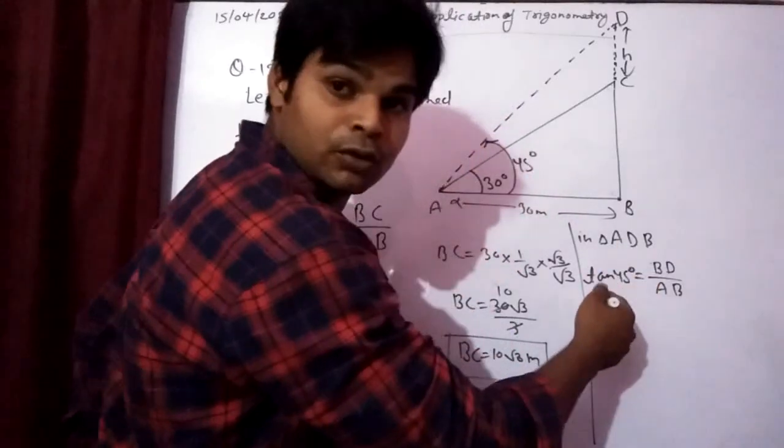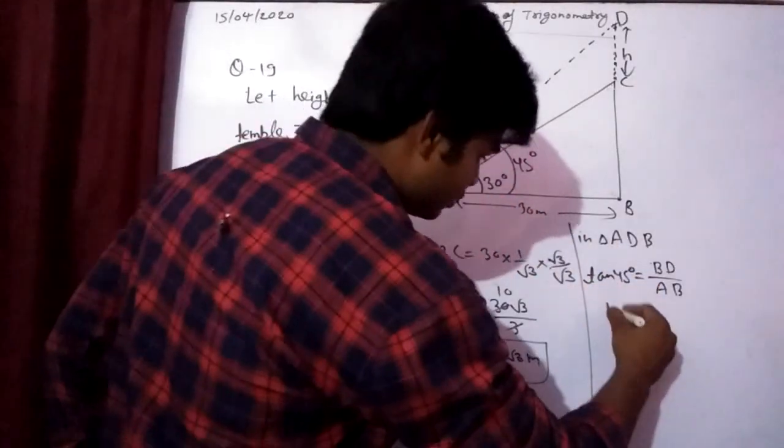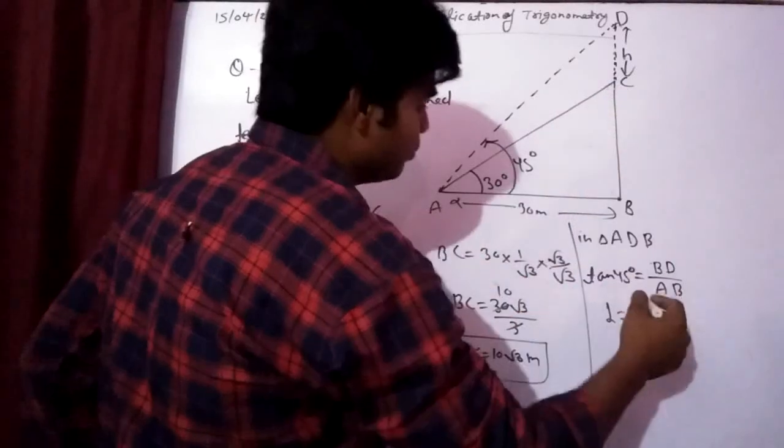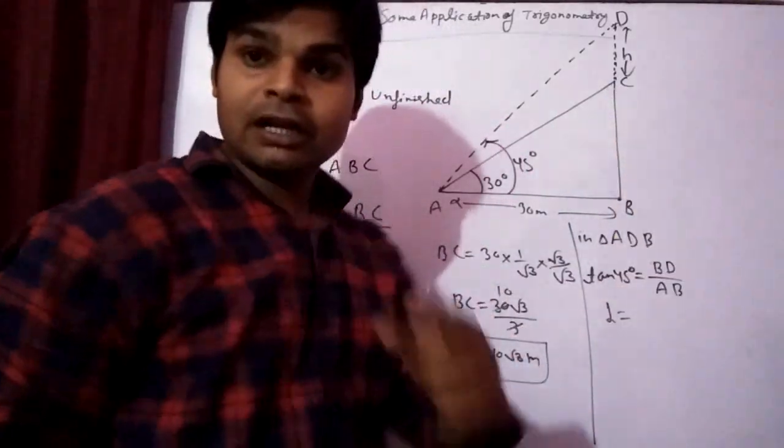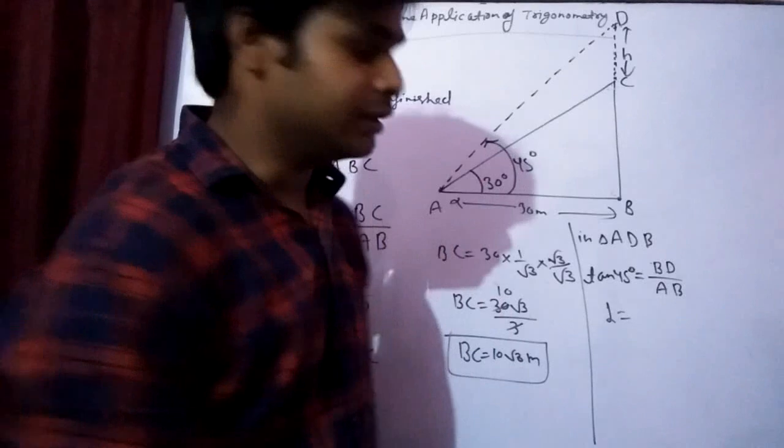Tan 45 degrees equals BD by AB. We can write BD as BC plus CD, where CD is the additional height needed.